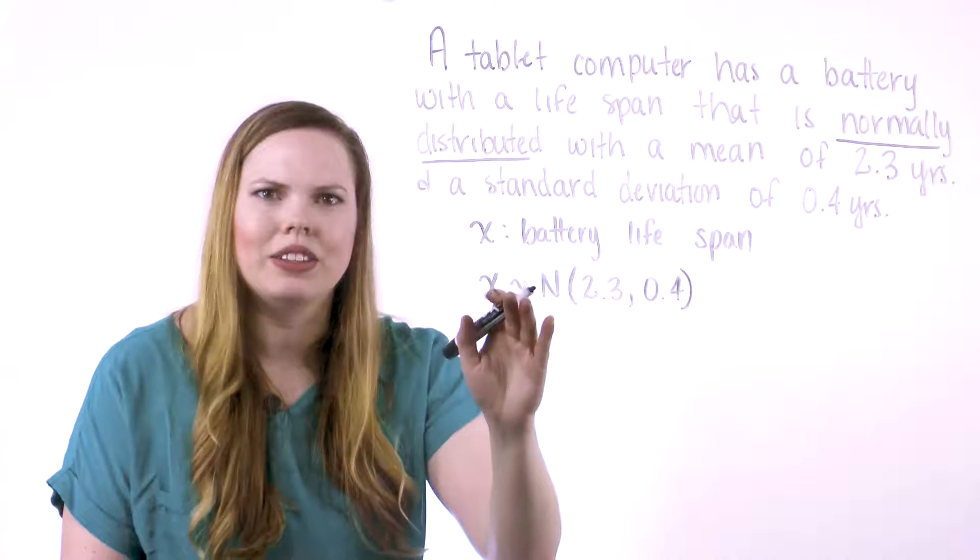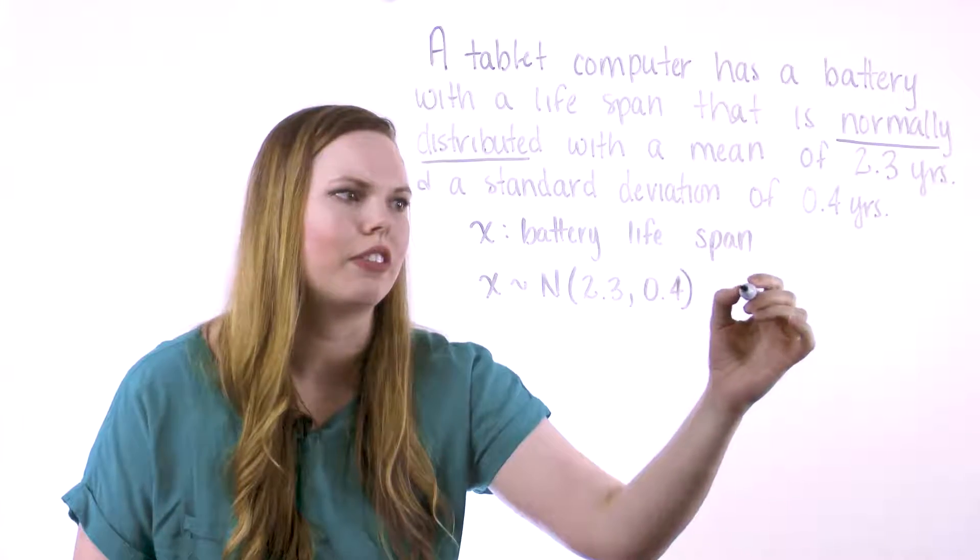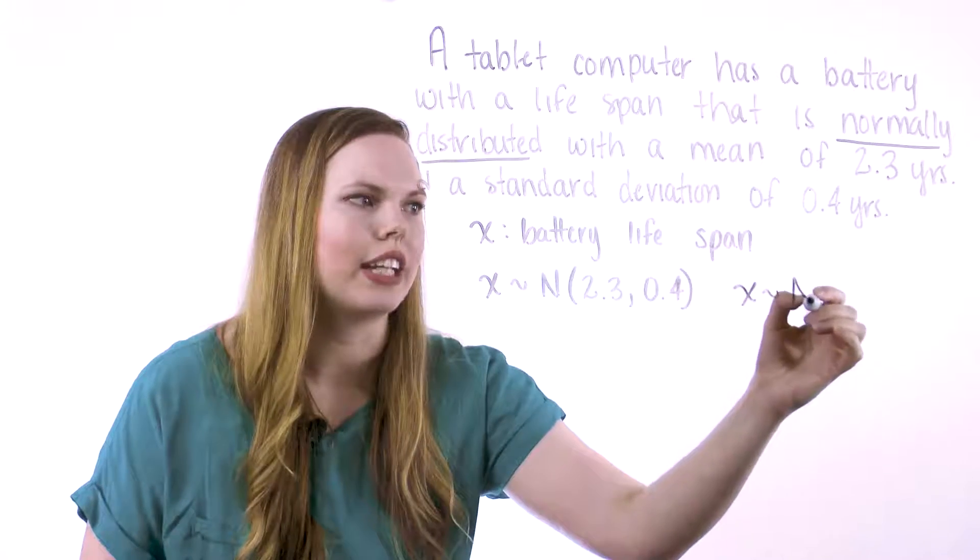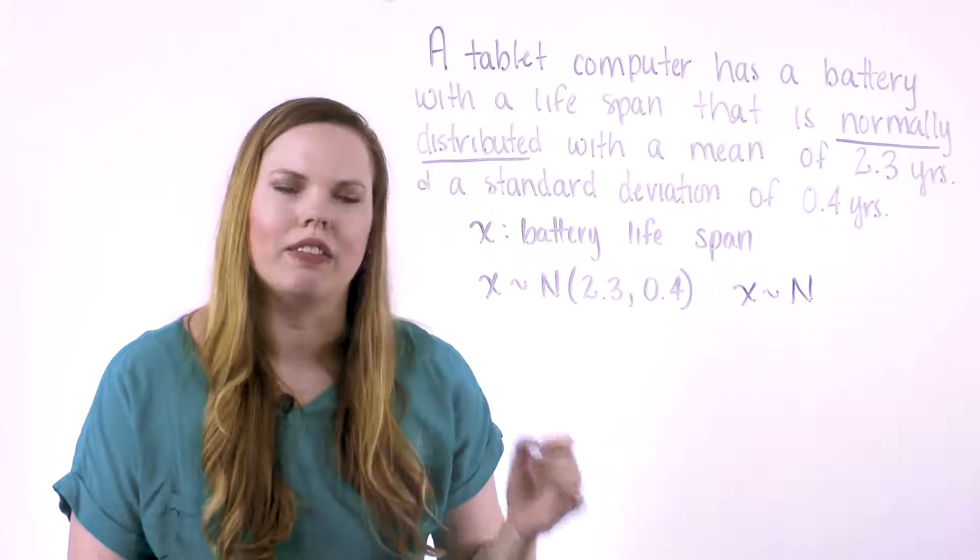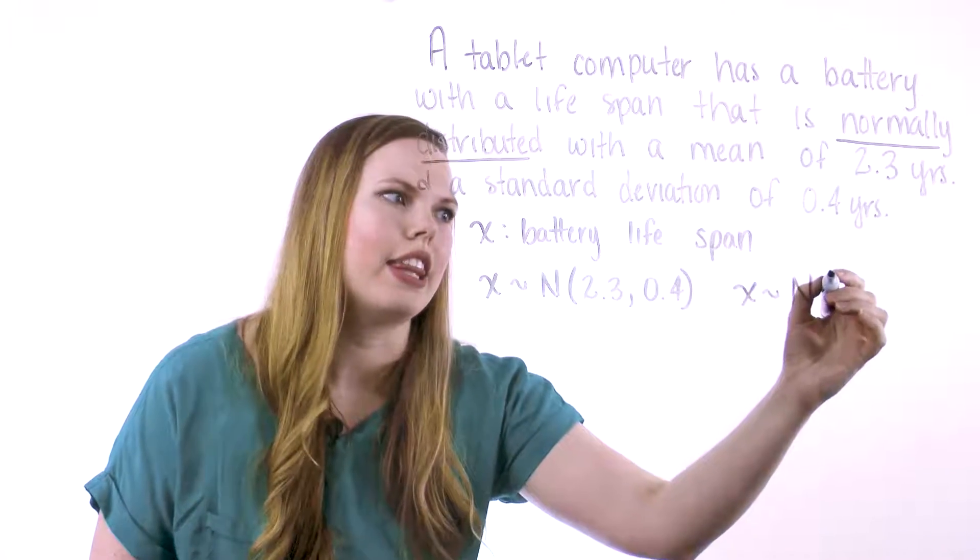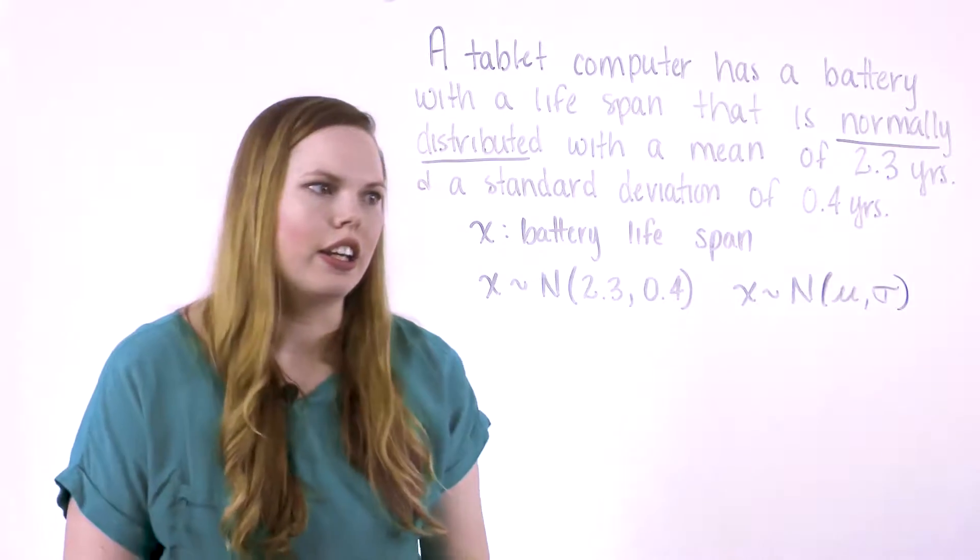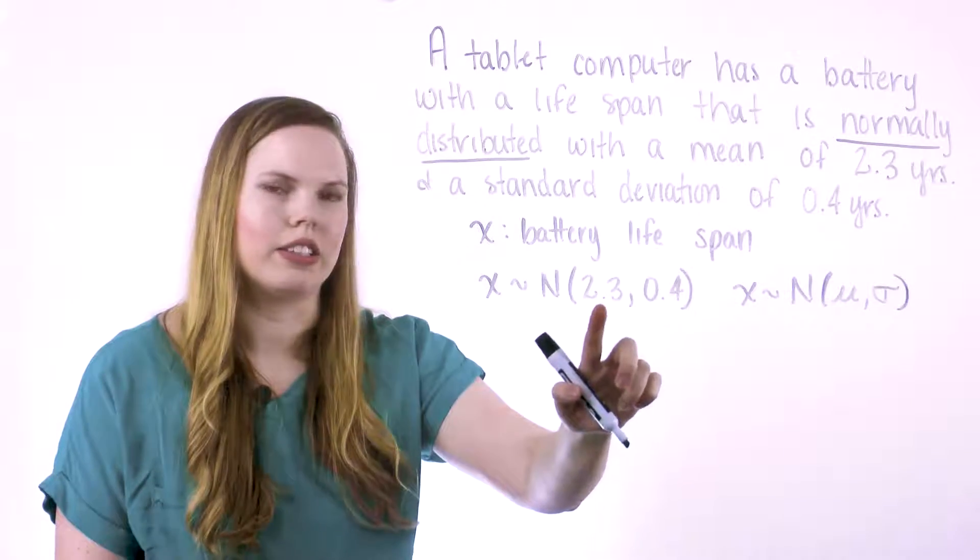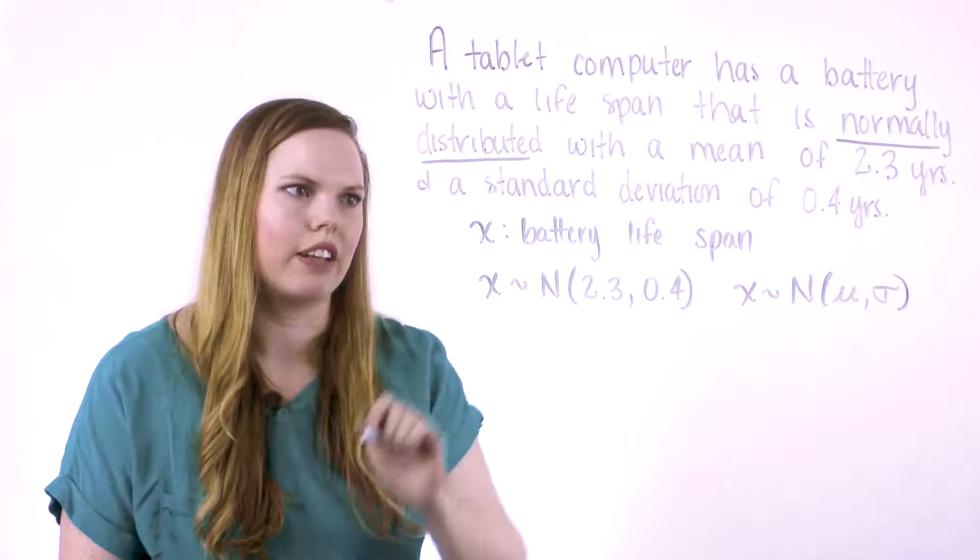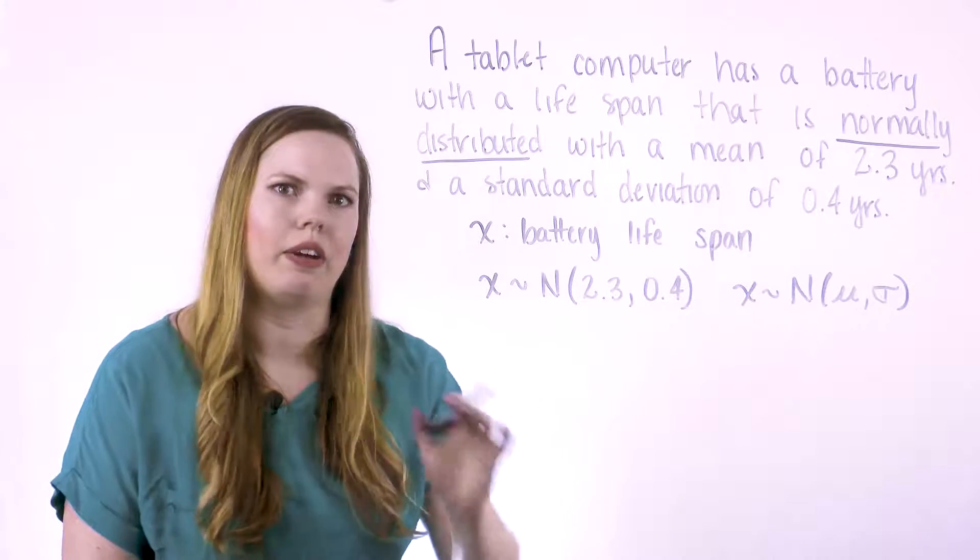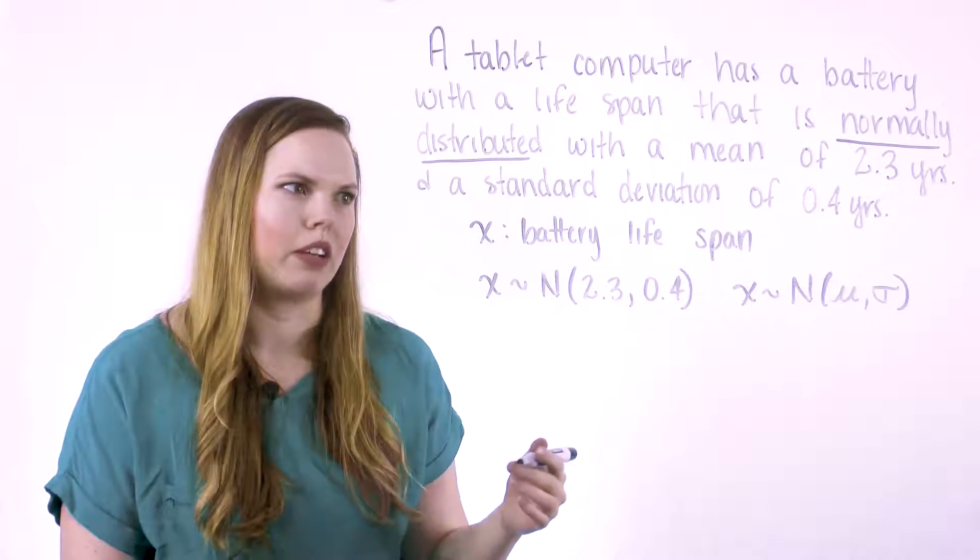You've seen me use this notation in class. Remember that it's referring to the n stands for that it is normally distributed, that variable is normally distributed. And then I write the mean and the standard deviation. And so anytime you see that, you know this first value is the mean and the second value is the standard deviation. That way we can kind of use this mathematical notation.